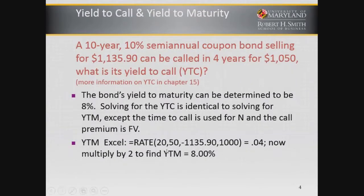For the yield to maturity, it is 20 periods (10 years), 50 for the payment — and that won't change. Minus $1,135.90 for the present value. Remember, we must use a minus sign when solving for the payment, for proper sign convention. The future value is a thousand. That solves for four percent; multiply by two, and that gives a yield to maturity of eight percent, which is below the coupon rate.